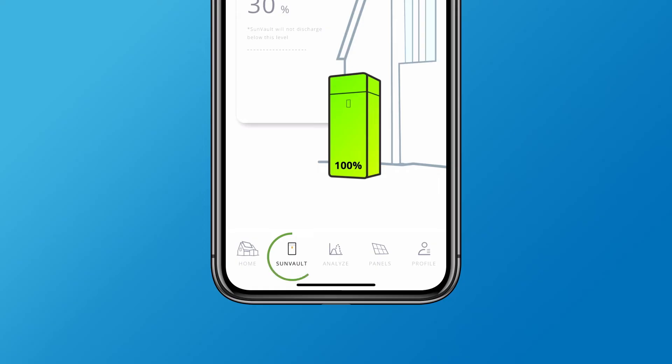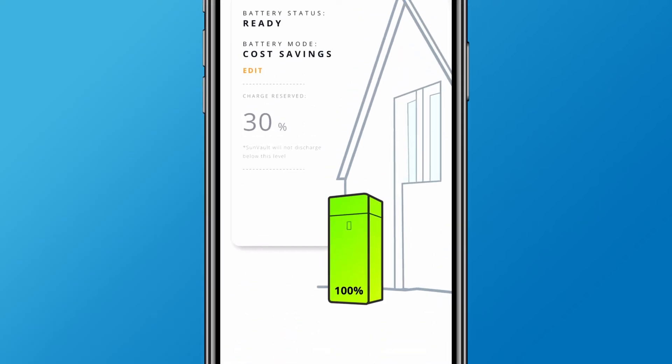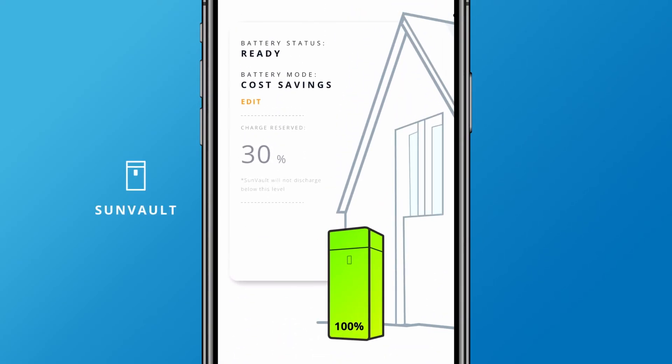If your home is backed up with SunVault storage, you'll see an extra tab called SunVault. Here you'll find all information about storage, including your battery status and charge level.